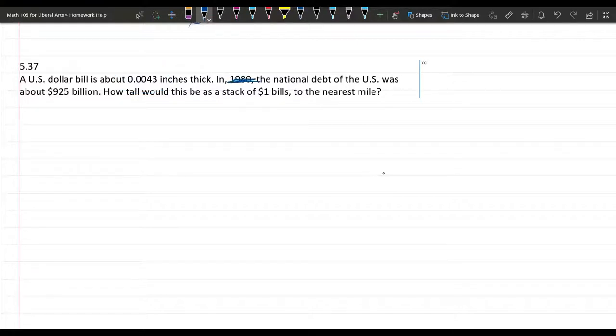1980 doesn't matter in this problem because it's just the year the U.S. debt was about $925 billion. And we want to know how tall is this stack of one dollar bills to the nearest mile. There's a couple things we have to be careful about.